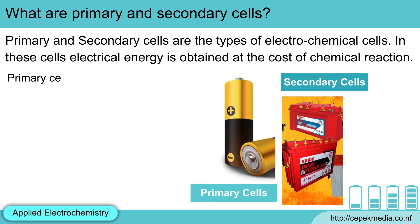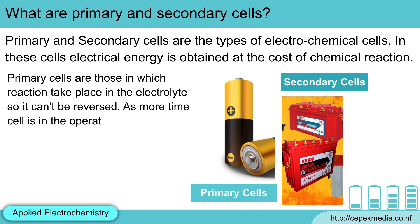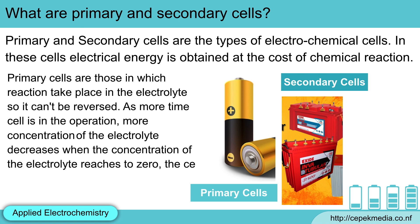Primary cells are those in which the reaction takes place in the electrolyte and cannot be reversed. As more time the cell is in operation, the concentration of the electrolyte decreases. When the concentration of the electrolyte reaches zero, the cell is to be discarded.